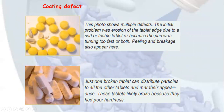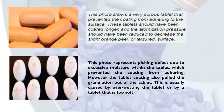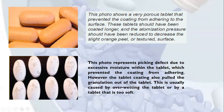Coating defects include multiple issues. Erosion of the tablet can occur due to a soft or friable tablet or because the pan was turning too fast, causing peeling and breakage. A broken tablet can distribute particles to all other tablets affecting their appearance. Porous tablets may prevent the coating from adhering to the surface. Inadequate coating time and high atomization pressure can cause an orange peel texture. Peaking defect is caused by excessive moisture within the tablet preventing the coating from adhering, or by over-wetting of the tablet or a tablet that is too soft, which can pull granulation out.